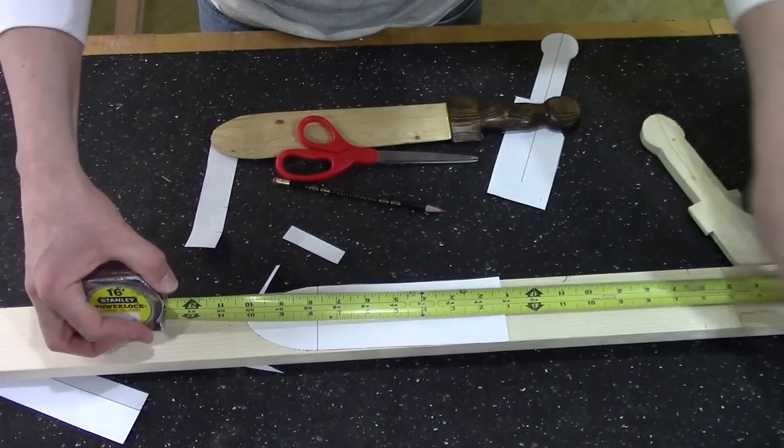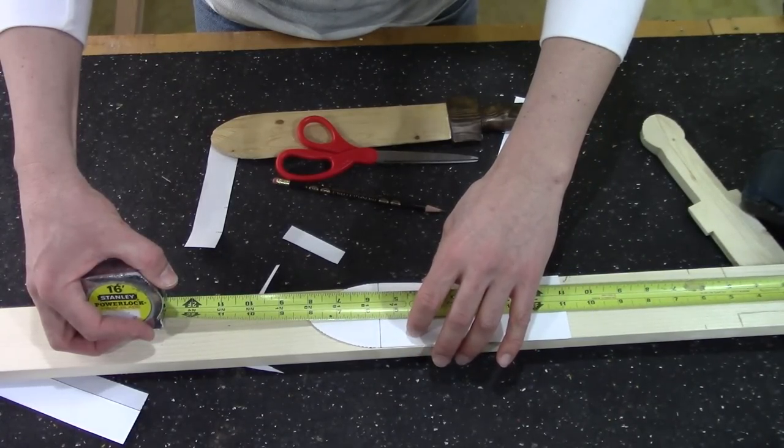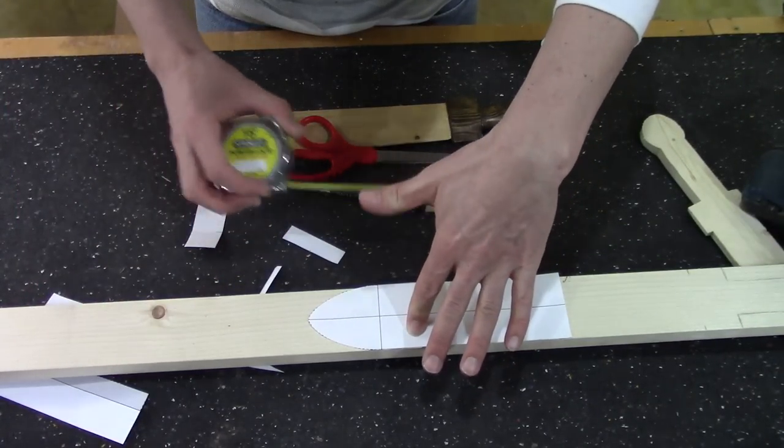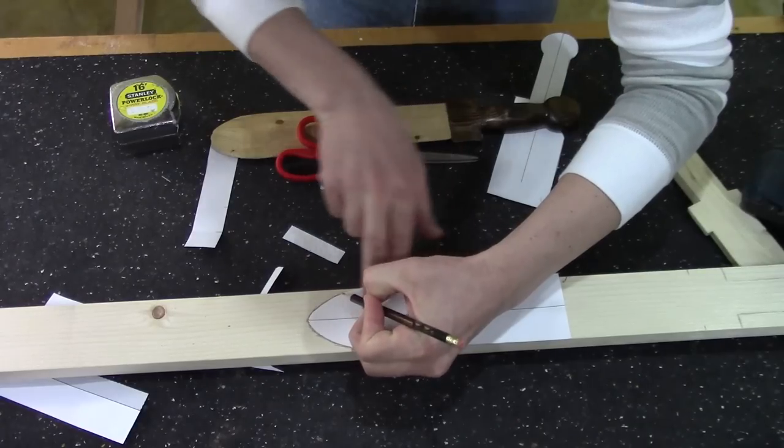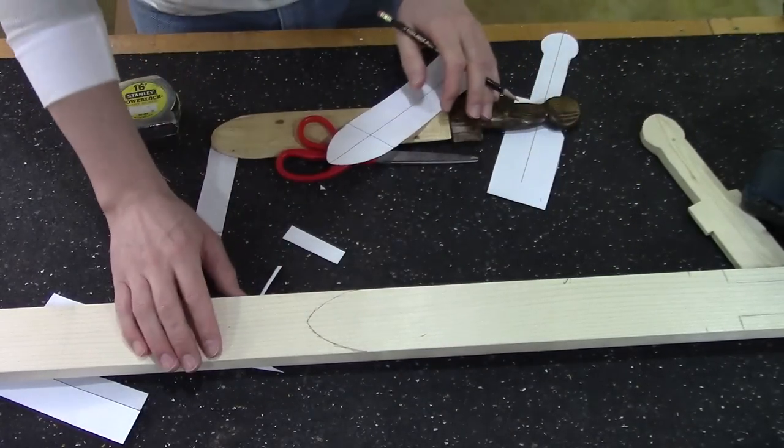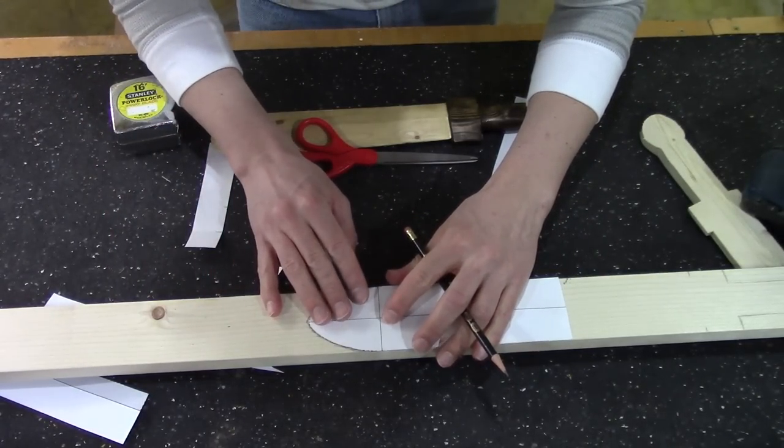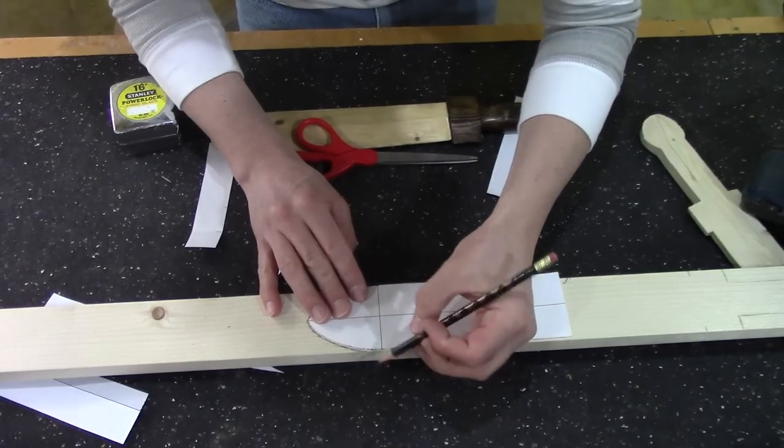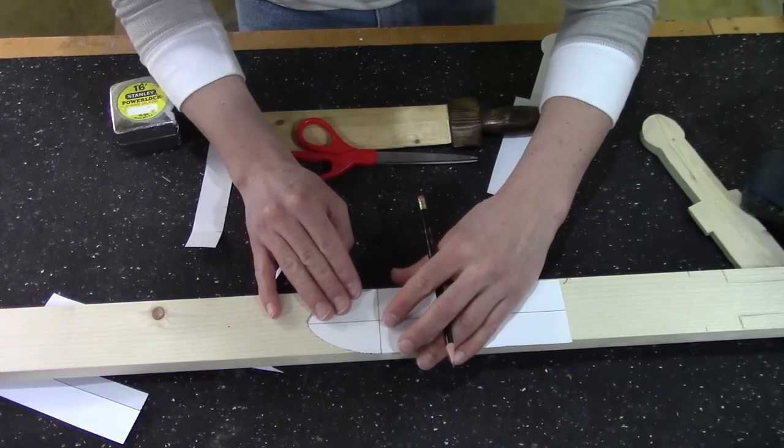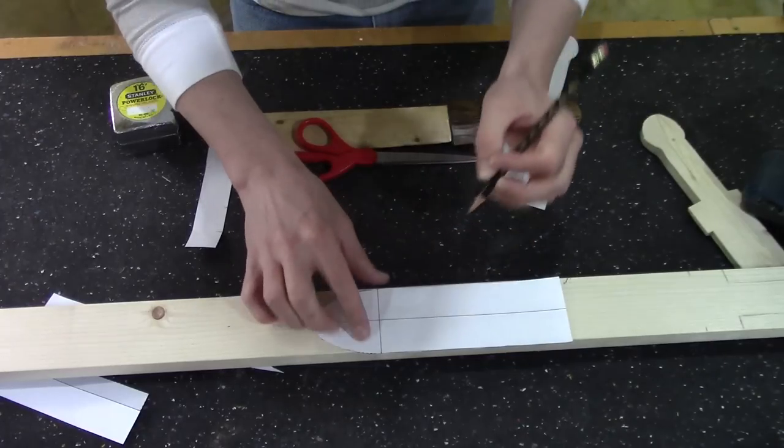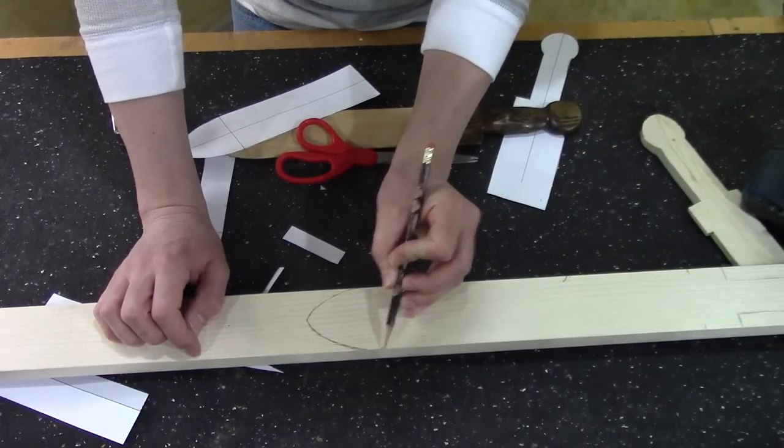Anywhere from 16 to 24 inches is a good length for this sword. I'm making mine 20 inches long. Then trace the tip of the sword. Make sure that it's centered on the board. There is a horizontal line along the edge of the sword you need to trace two little markings onto.